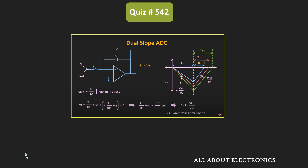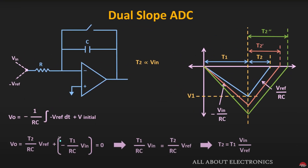On the main channel we have already covered the dual slope ADC. This dual slope ADC has two slopes, and this is the basic integrator circuit for the dual slope ADC. Initially, the input is connected to Vin, which is the input voltage we want to convert — in this case 1.25 volts. This input voltage gets integrated for a finite time T1.